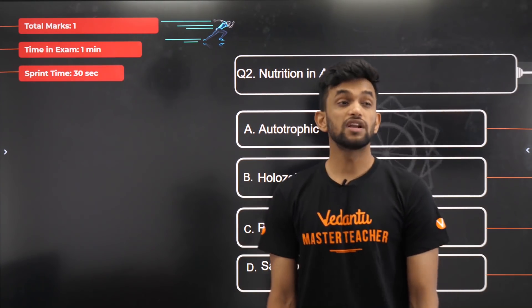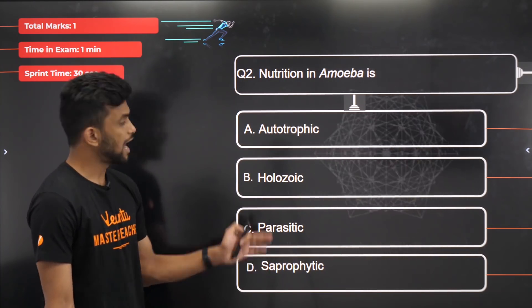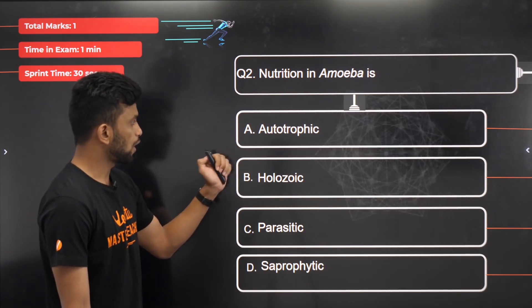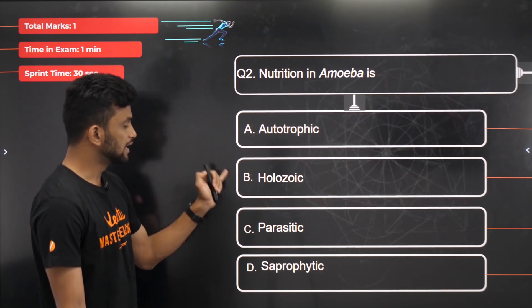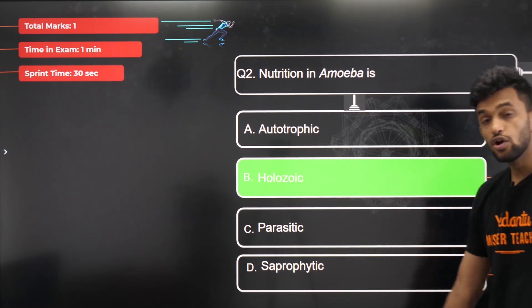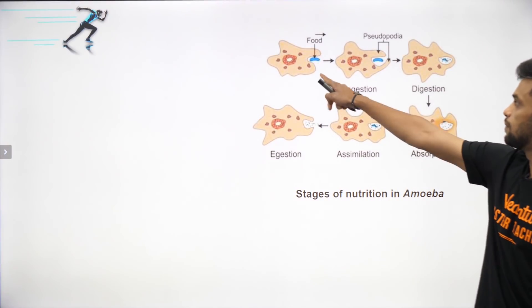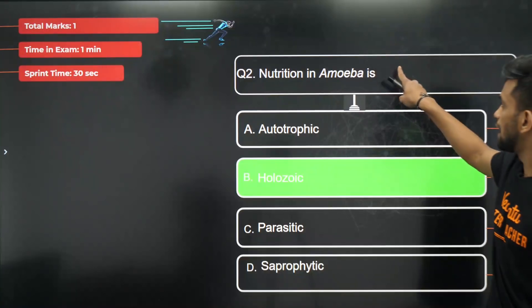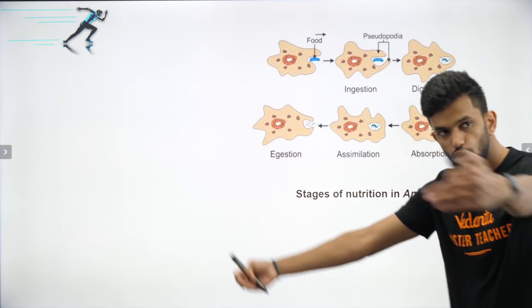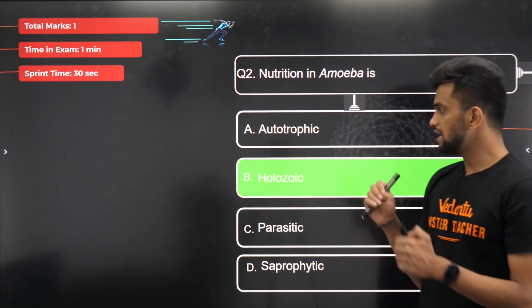Next question: nutrition in amoeba. The answer is right in front of your eyes, you just have to recognize it. It's not autotrophic, it is holozoic. It takes in solid food. You have seen phagocytosis in amoeba. Amoeba extends pseudopodia and ingests the food and releases waste material. Phagocytosis means the cell membrane extends to engulf solid food.